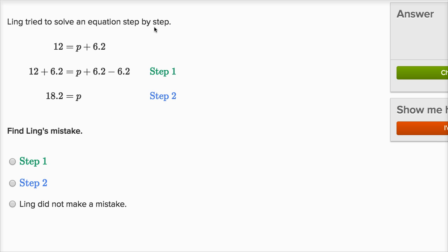Ling tried to solve an equation step by step. All right, find Ling's mistake. Let's see, 12 is equal to p plus 6.2, all right. So now it looks like on the left-hand side, Ling adds 6.2, and on the right-hand side, so there was p plus 6.2 is the old right-hand side, but it looks like they then try to subtract 6.2.